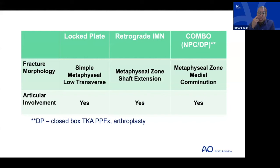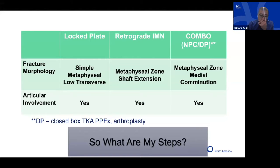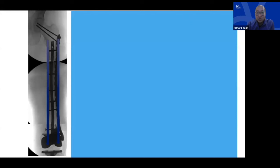My second most common scenario is a combo — either nail-plate or dual plate — for medial comminution in an osteoporotic patient with a large metaphyseal fracture zone. You need something to address both sides to distribute stress to the medial side. My steps: I'm a nailer first about 80 percent of the time. I use a radiolucent flat table with a sterile bump under the ipsilateral ischial tuberosity.